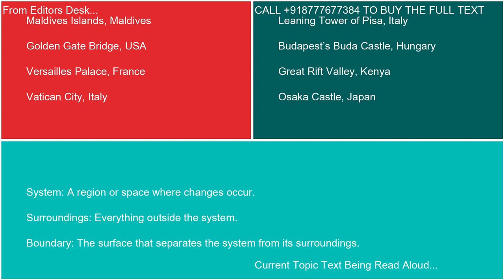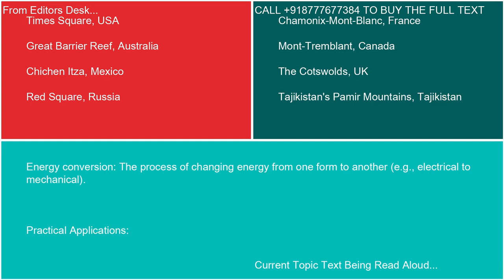Key concepts: System — a region or space where changes occur. Surroundings — everything outside the system. Boundary — the surface that separates the system from its surroundings. Energy conversion — the process of changing energy from one form to another, e.g., electrical to mechanical.